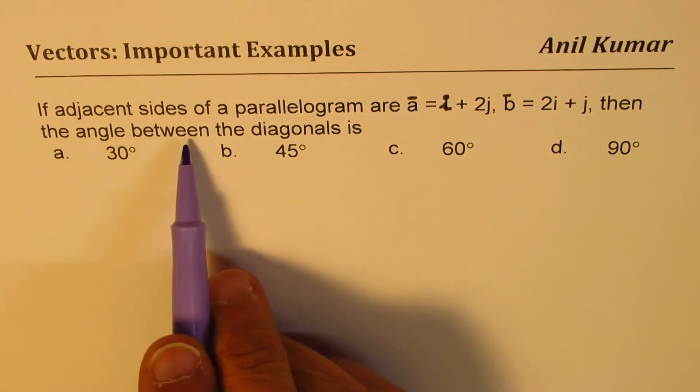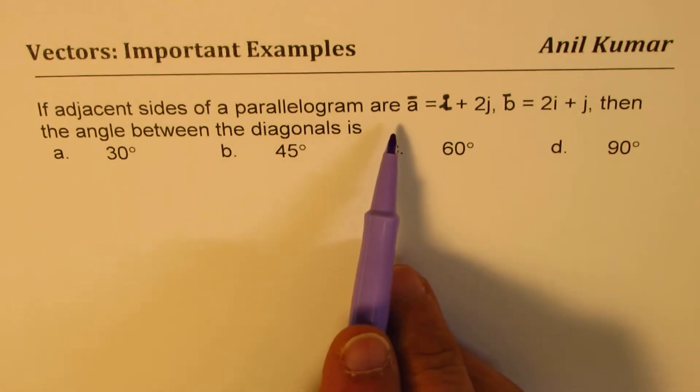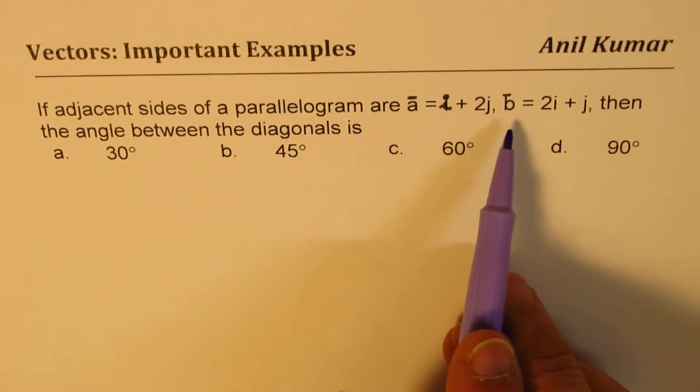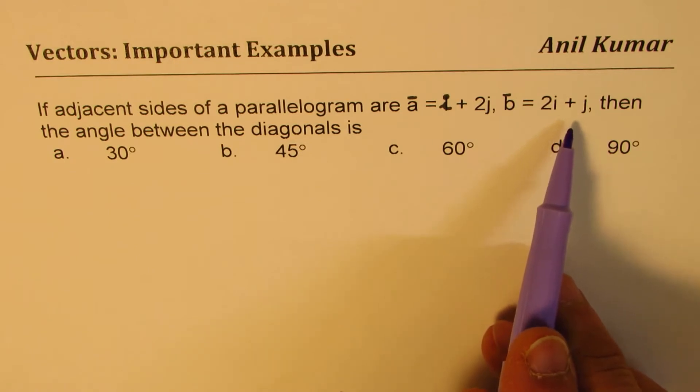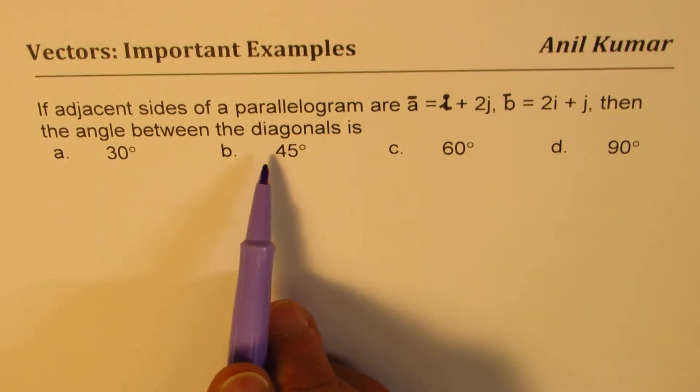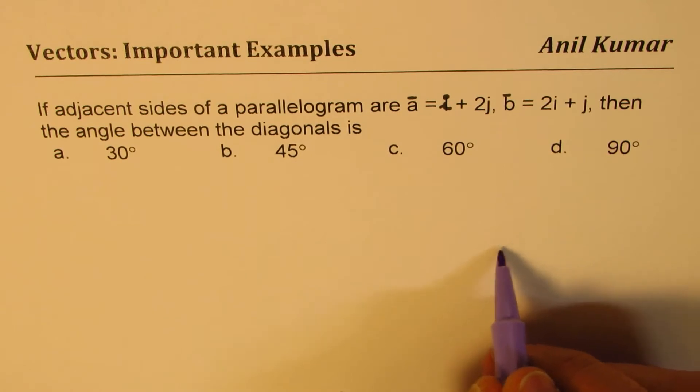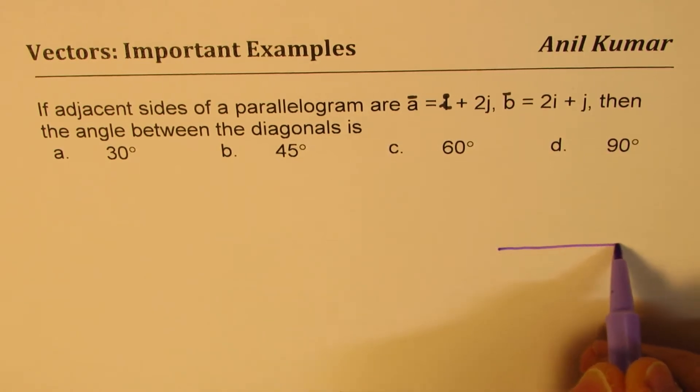If adjacent sides of a parallelogram are a = i + 2j, b = 2i + j, then the angle between the diagonals is what? So let's sketch and then try to figure it out.